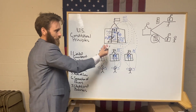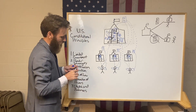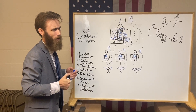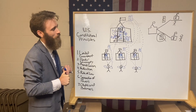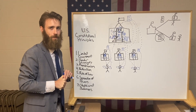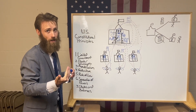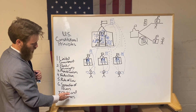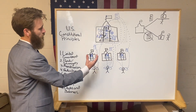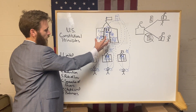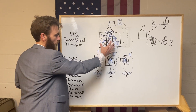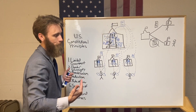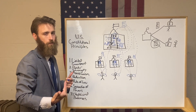The founders set up checks and balances so the branches would fight each other and keep power separate. They're not incentivized to work together — they work against each other. The founders would be happy with government people being against each other, because if they were against each other, they wouldn't be against us. The founders wanted the government to work against each other to prevent the power from coagulating, concentrating, and being used against the people — which they felt was just the natural course human nature would take.